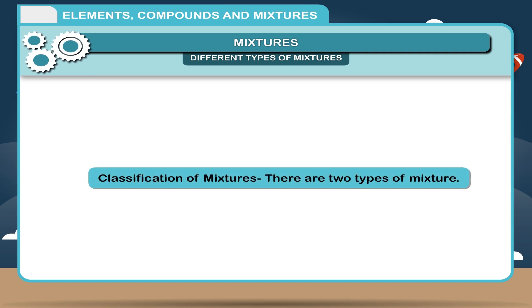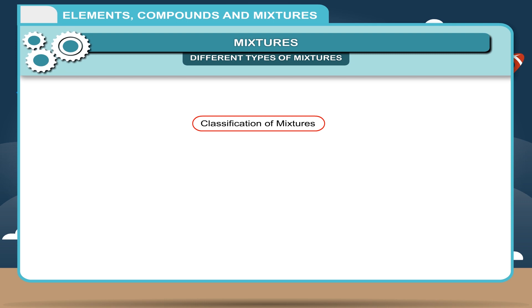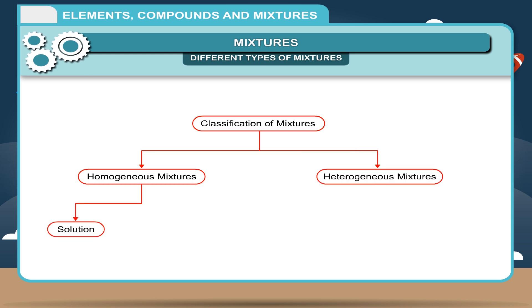Classification of mixtures: There are two types of mixtures - homogeneous mixtures and heterogeneous mixtures. These include solutions, alloys, suspensions, and emulsions.